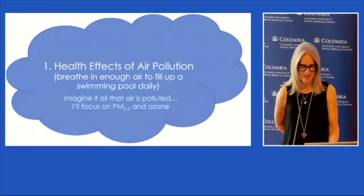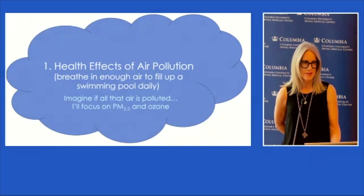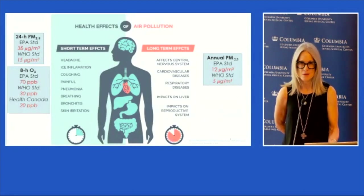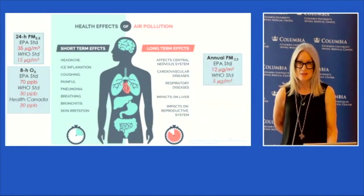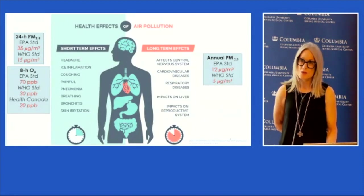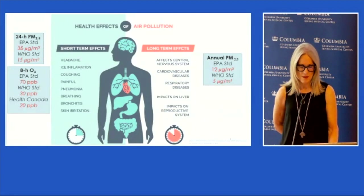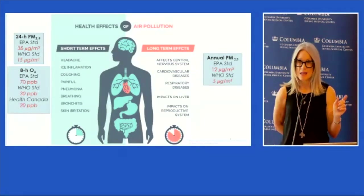When we breathe enough air daily to fill a standard swimming pool, and that air is loaded with contaminants, it's obvious it will affect our health. There are both short-term and long-term effects of air pollution, and the US EPA says air quality standards protect public health, including the most vulnerable. For PM 2.5, we have two standards: a short-term 24-hour standard of 35 micrograms per cubic meter, and an annual standard of 12 micrograms per cubic meter. When you have an air quality monitor in your house and it hits higher than 35, you're going to be worried, and it often does.